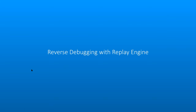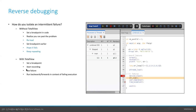The next topic is reverse debugging with Replay Engine. Without reverse debugging, if you had an intermittent failure, you'd set a breakpoint, realize you ran past it, reload the application, set the breakpoint higher up, and repeat until you narrowed down the problem. With Replay Engine, you can set a breakpoint, start recording, see the failure, and run backwards and forwards within the context of the failing execution — people really appreciate how much time it saves.